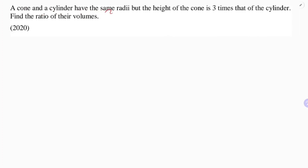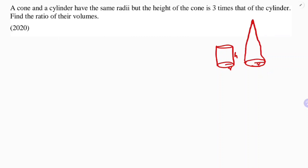A cone and a cylinder have the same radius, but the height of the cone is three times the height of the cylinder. The cylinder and cone are of the same radius. Suppose the height of the cylinder is h, then the height of the cone is 3h. We need to find the ratio of their volumes.